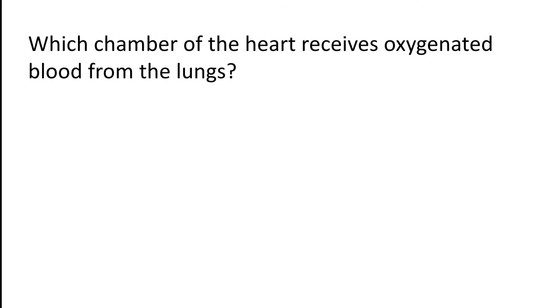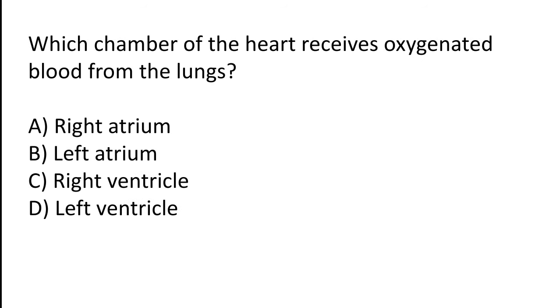Which chamber of the heart receives oxygenated blood from the lungs? (a) Right atrium, (b) left atrium, (c) right ventricle, (d) left ventricle.